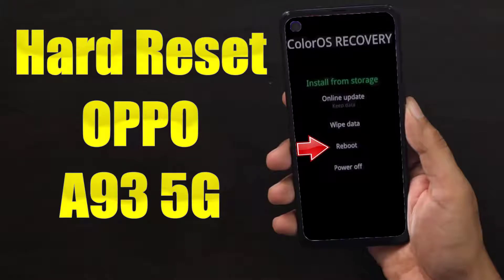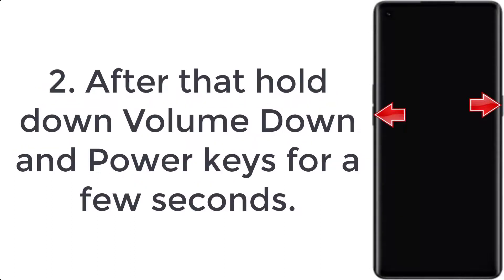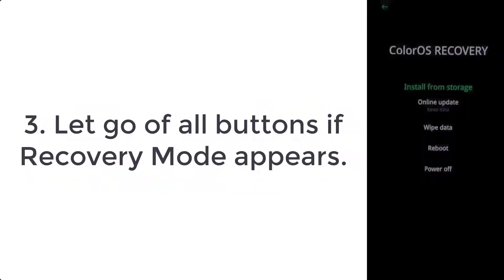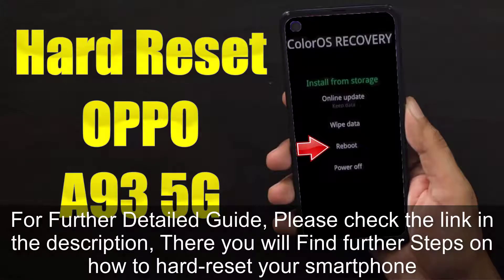How to hard reset Oppo A93 5G. Step 1: switch on the mobile by pressing the power button for a couple of seconds. Step 2: hold down the volume down and power keys for a few seconds. Step 3: let go of all buttons if recovery mode appears.